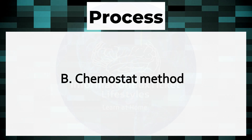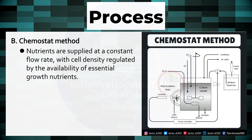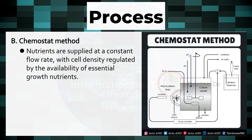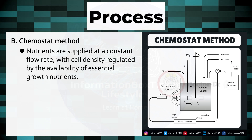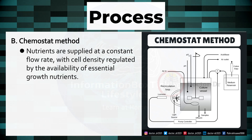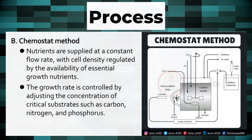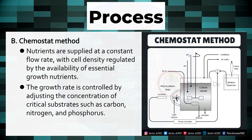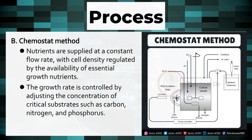Chemostat Method. Nutrients are supplied at a constant flow rate, with cell density regulated by the availability of essential growth nutrients. The growth rate is controlled by adjusting the concentration of critical substrates, such as carbon, nitrogen, and phosphorus.